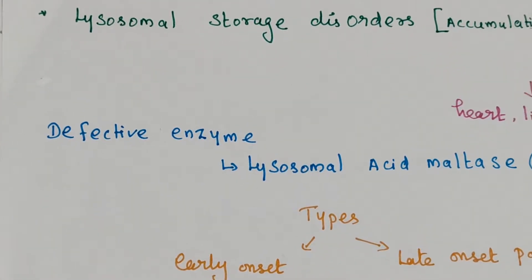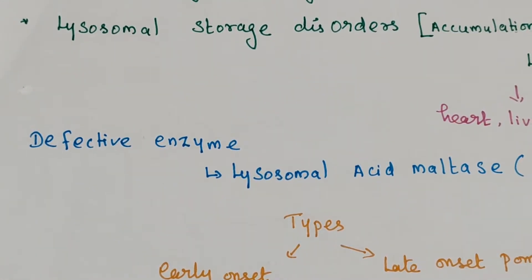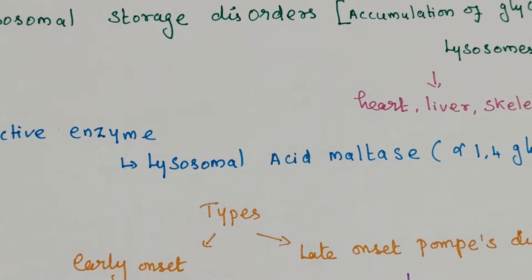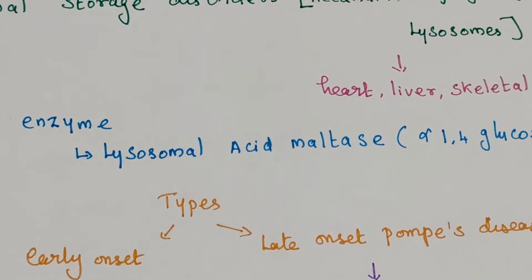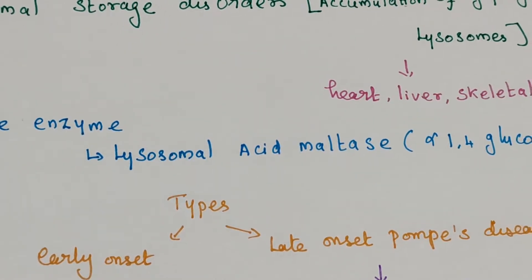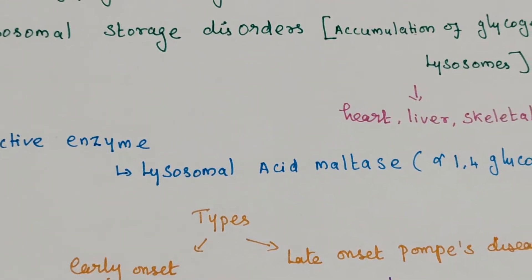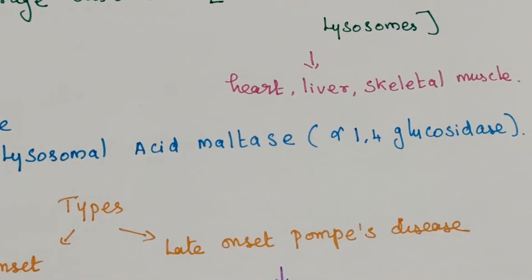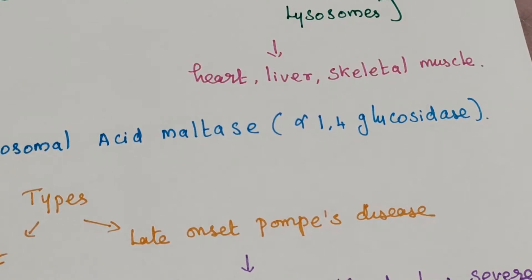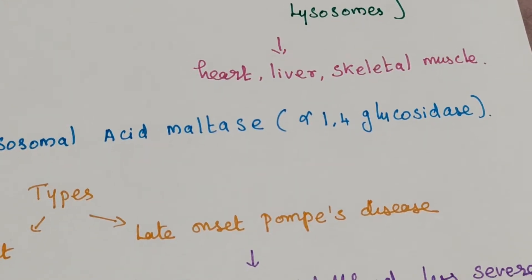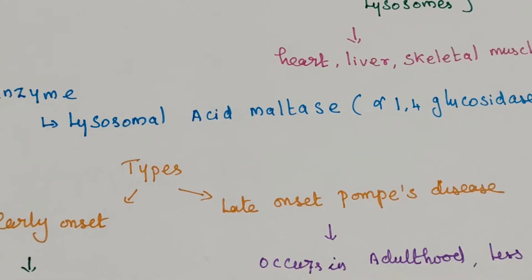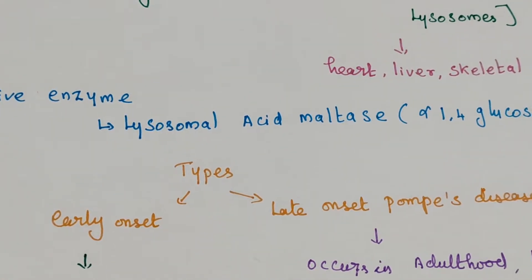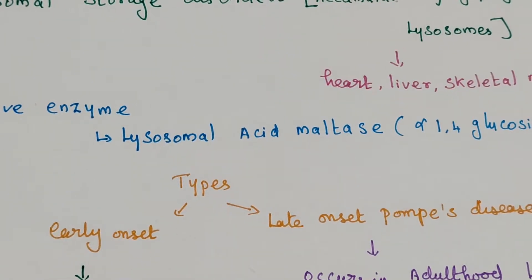Pompe's disease is due to a defective enzyme. That enzyme is lysosomal acid maltase, also known as alpha 1,4-glycosidase. A defect in this enzyme causes accumulation of glycogen in the liver, skeletal muscles, and particularly in the heart.